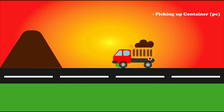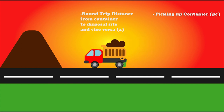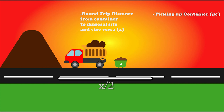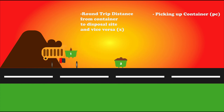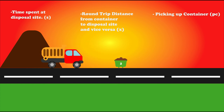Now, the truck travels to the disposal site for dumping. Let x/2 be the distance from container 1 to the disposal site. Thus, the round trip distance — from container 1 to the disposal site and back to container 1 — is x. The waste truck may spend some time at the disposal site waiting in line to dump the waste and also takes some time to dump the waste. This total time involved at the site is termed as at-site time, denoted as S.